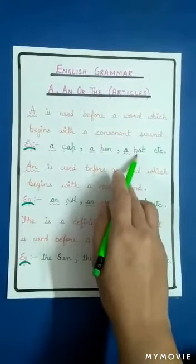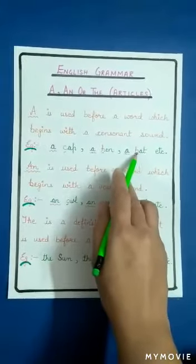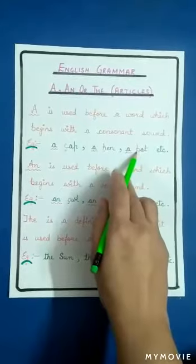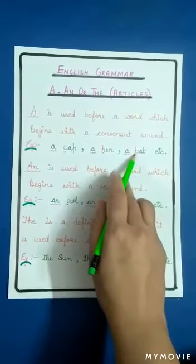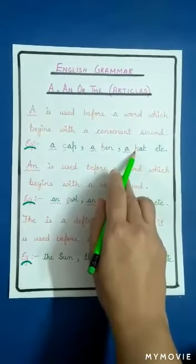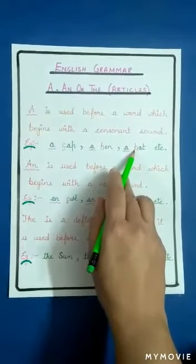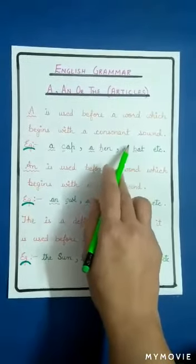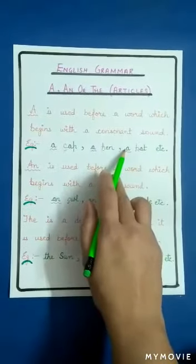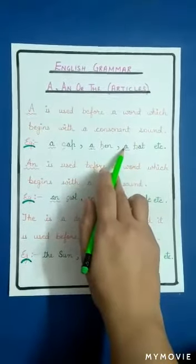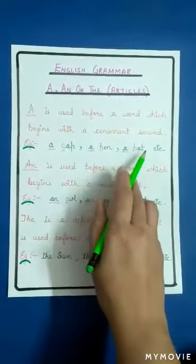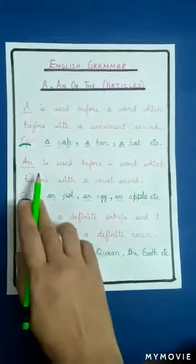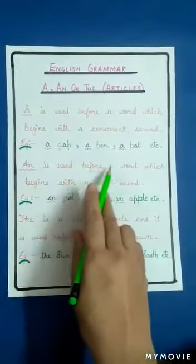'A bat' — when we write 'bat', it starts with 'b'. Jab hum 'bat' likhte hain toh 'b' se start hota hai, aur 'b' bhi ek consonant hai, isliye uske aage hum 'a' lagate hain. Etc.